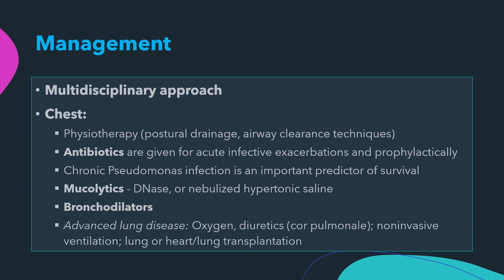Advanced lung disease is managed with oxygen, diuretics in cases of cor pulmonale, and non-invasive ventilation. Lung or combined heart and lung transplantation can be considered, but availability of donor organs is an issue, and post-transplant survival is around five years.